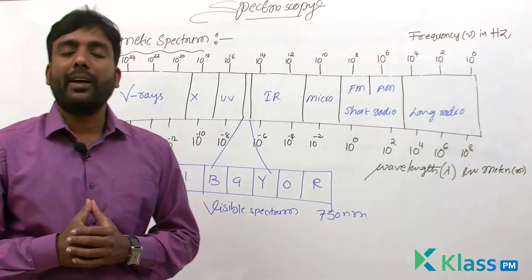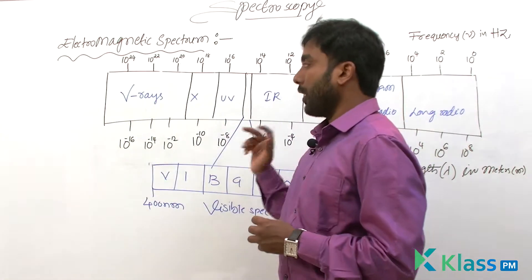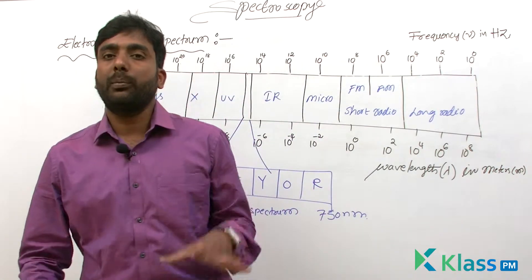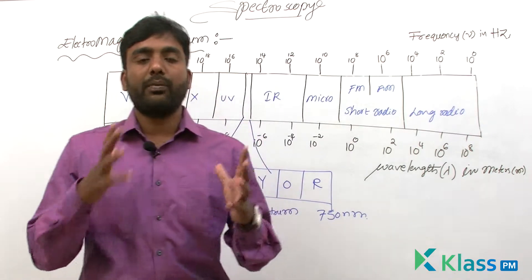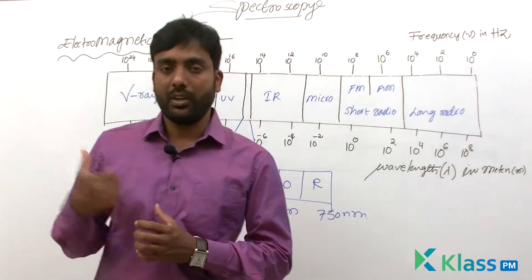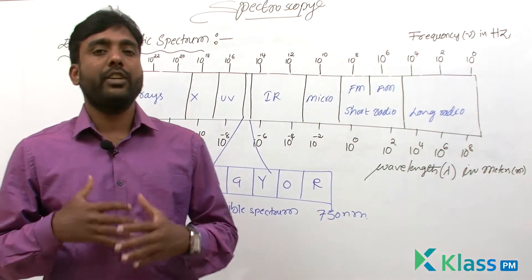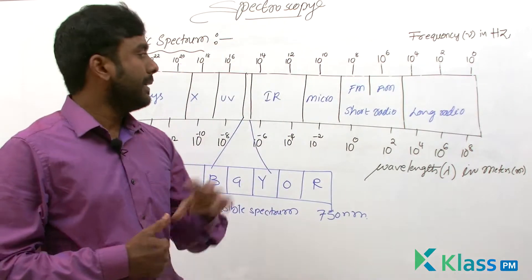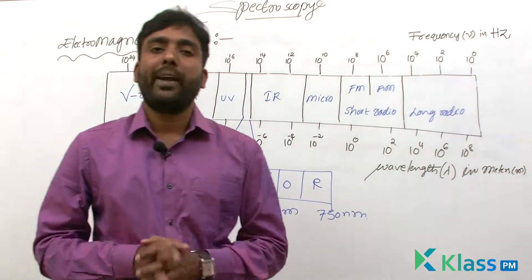This is the electromagnetic spectrum. One more we can include in this — cosmic rays. Cosmic rays are highly energetic; they have more energy than gamma rays and are found only in outer space. That's why they are not included in this table. Cosmic rays are more energetic than gamma rays, found only in outer space. This arrangement is called electromagnetic spectrum.